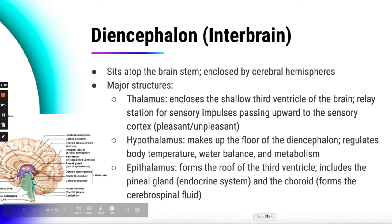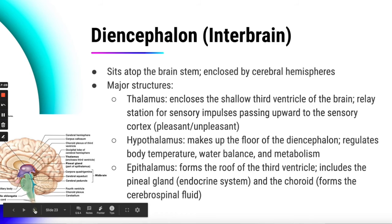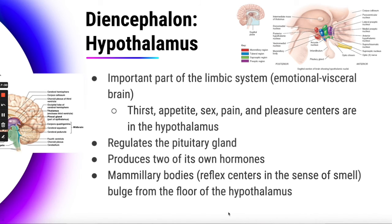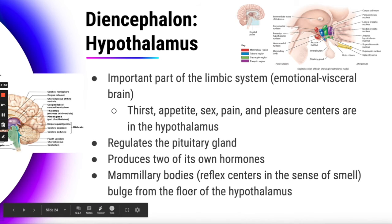The epithalamus forms the roof of the third ventricle and includes the pineal gland, which we'll cover in the endocrine system after winter break. The choroid plexus forms cerebrospinal fluid, which we'll discuss later this lesson. The hypothalamus is an important part of the limbic system, referred to as the emotional-visceral brain. It has a big role in thirst, appetite, sex, pain, and pleasure centers. The hypothalamus regulates the pituitary gland and produces two of its own hormones. It also has mammillary bodies that help with the sense of smell, projecting from the base of the hypothalamus.